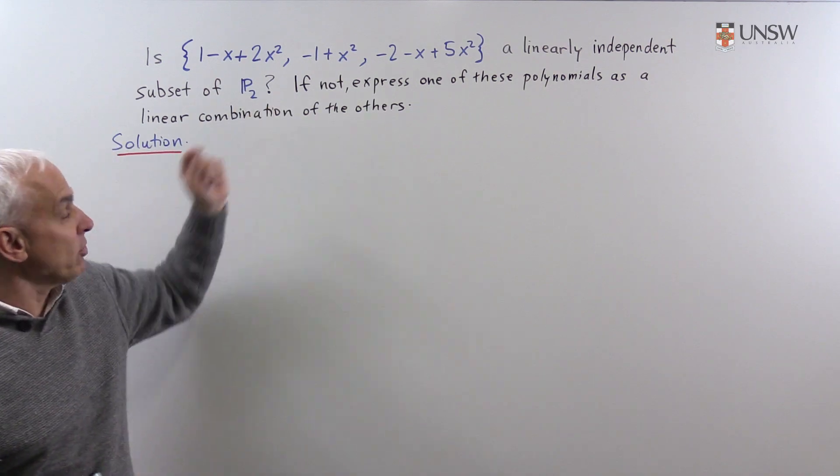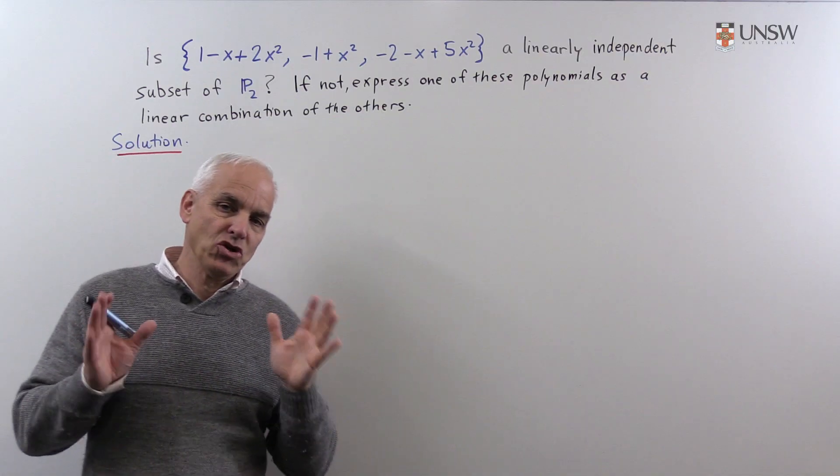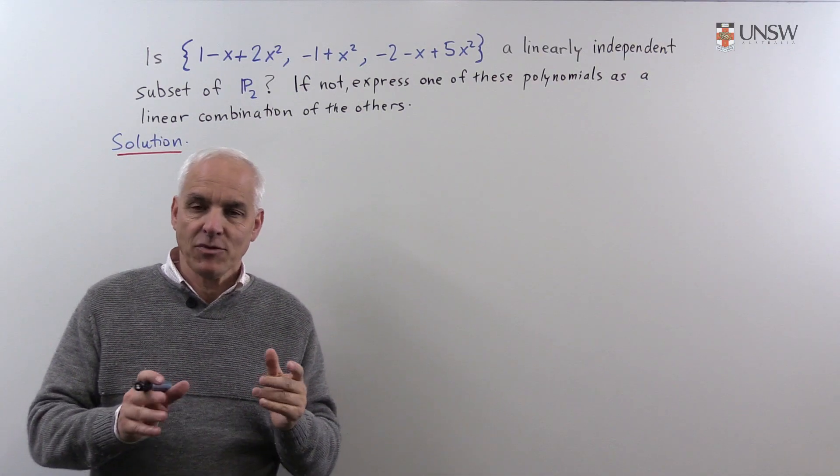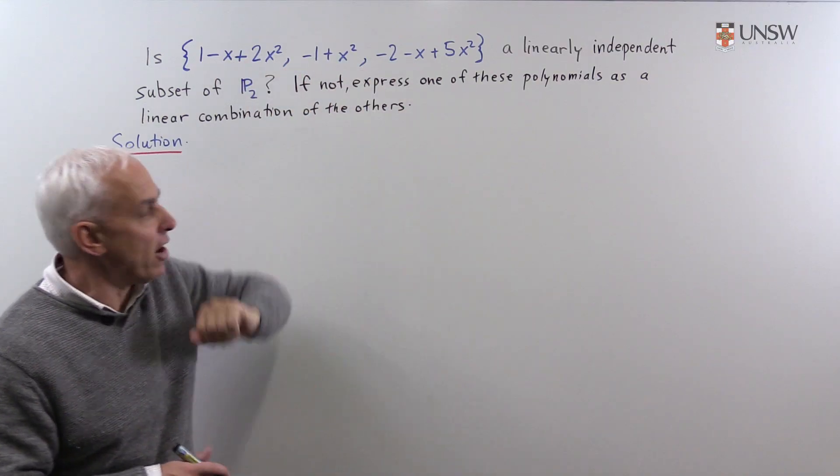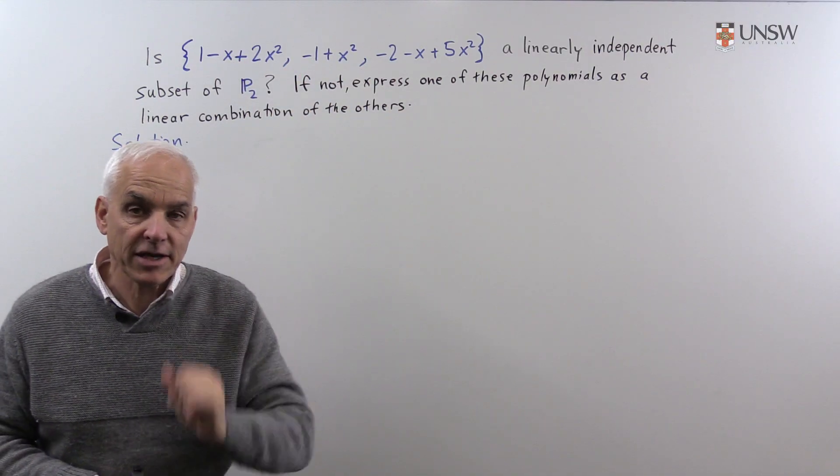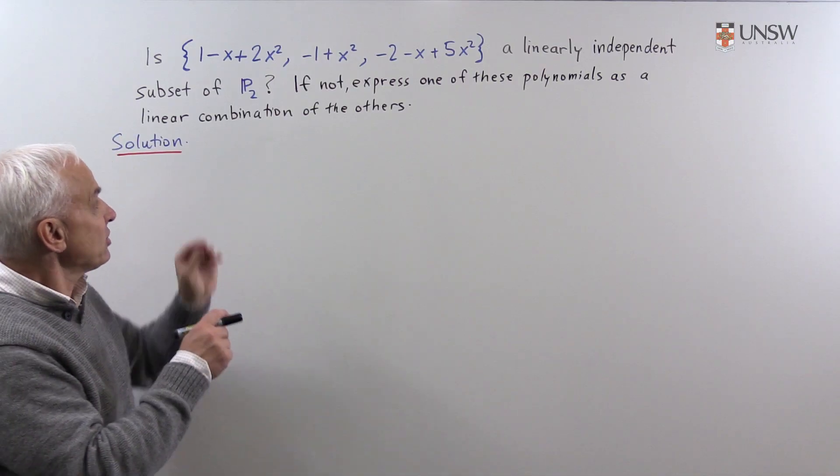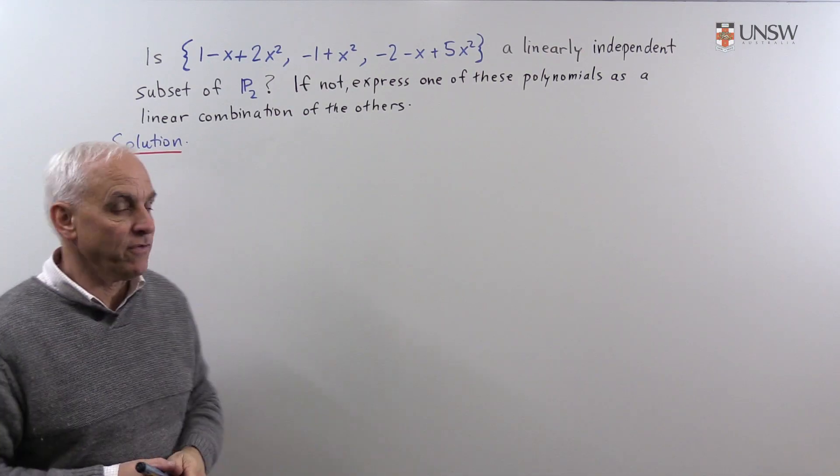We're working in P2, which is a space of polynomials of degree 2 or less over R, and we're asked whether these three polynomials here are linearly independent, and if they're not linearly independent, to express one of them as a linear combination of the others.